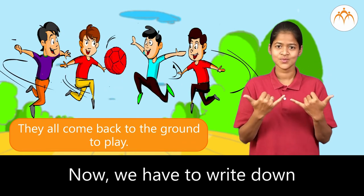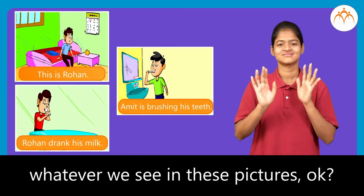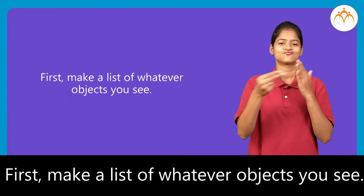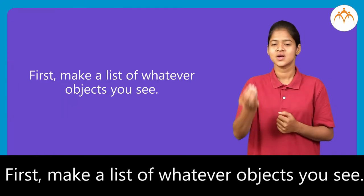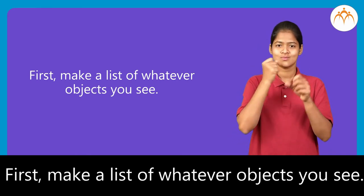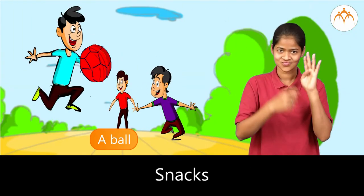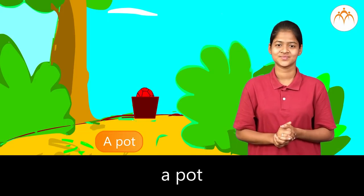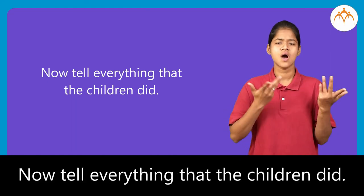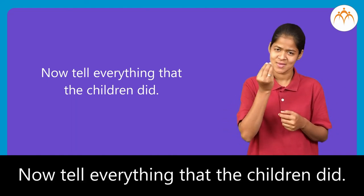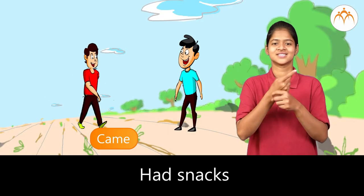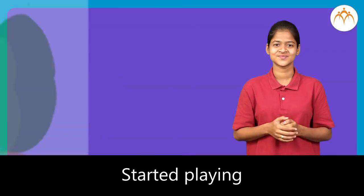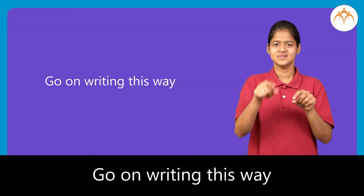Now, we have to write down whatever we see in these pictures. First, make a list of whatever objects you see: snacks, a ball, a playground, a building, a pot. Now, tell everything that the children did: had snacks, came, came to the playground, started playing. Go on writing this way.